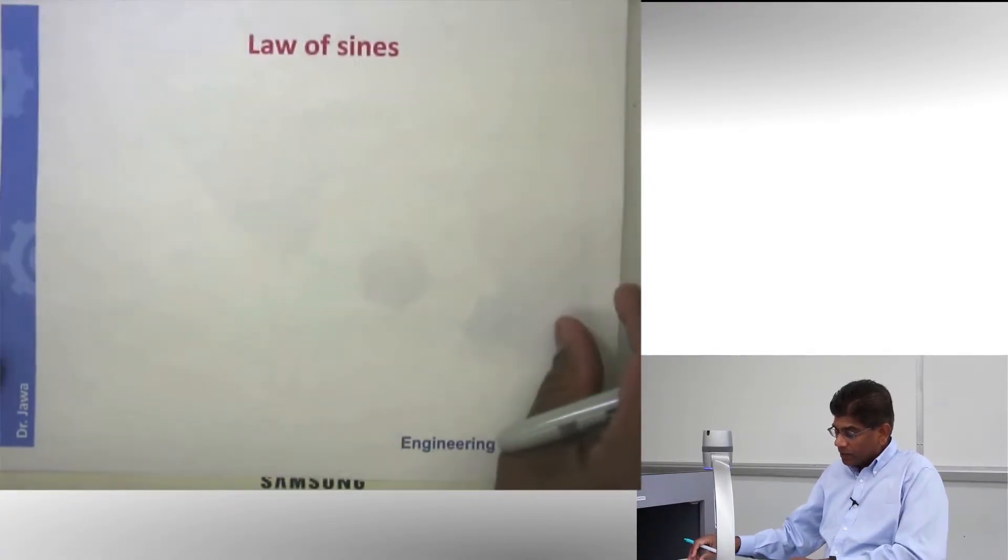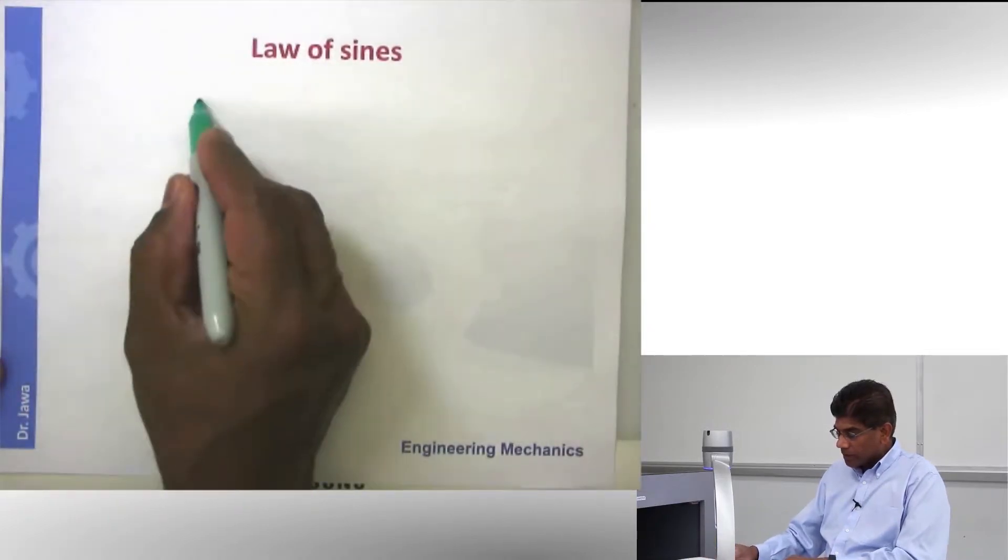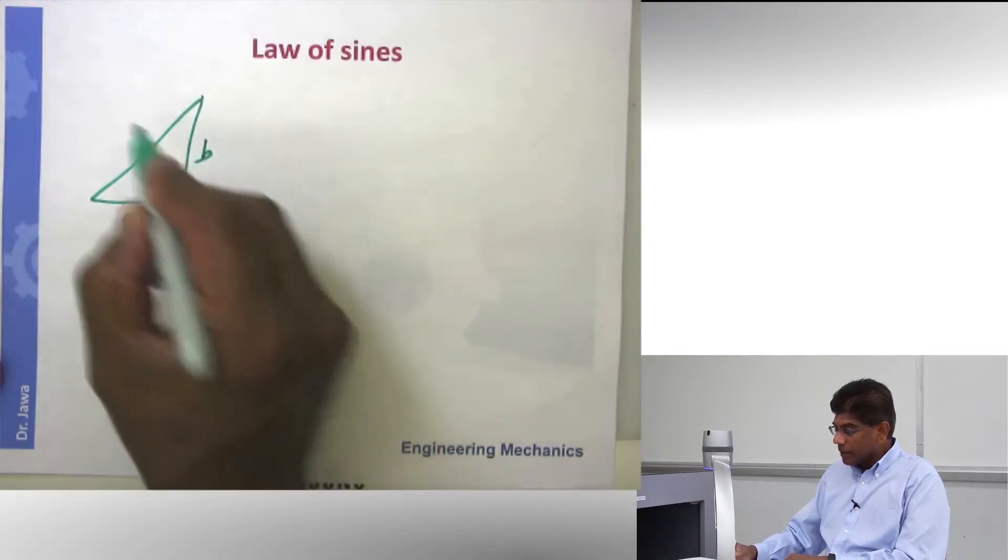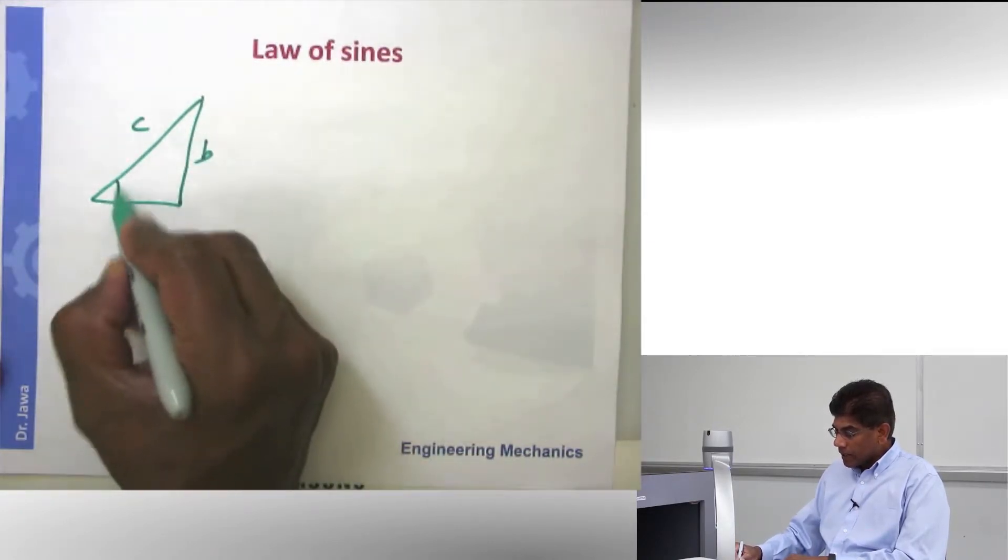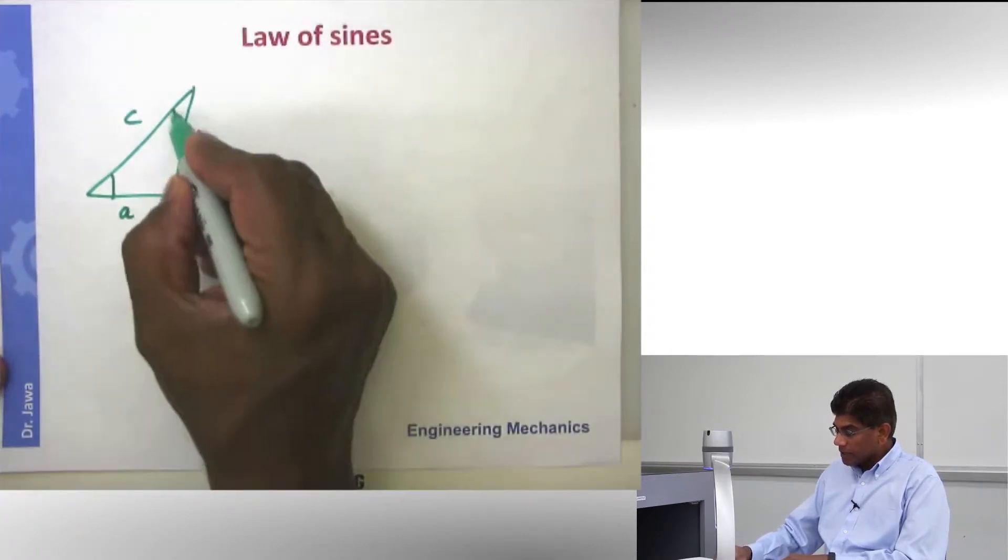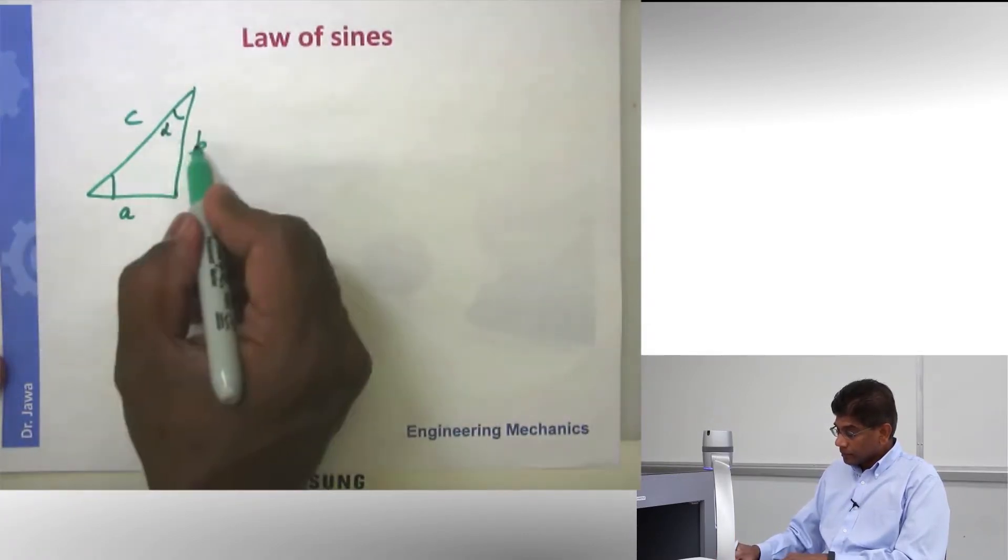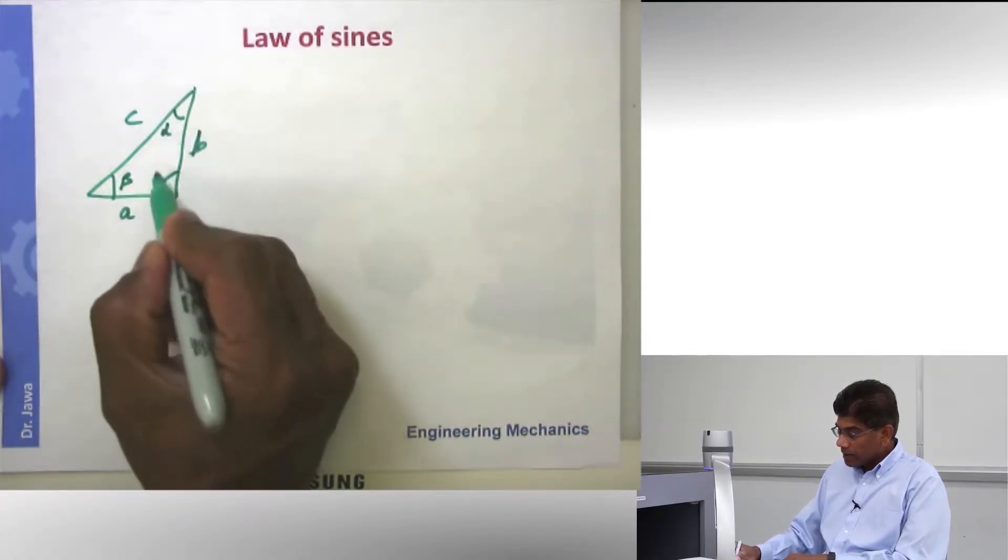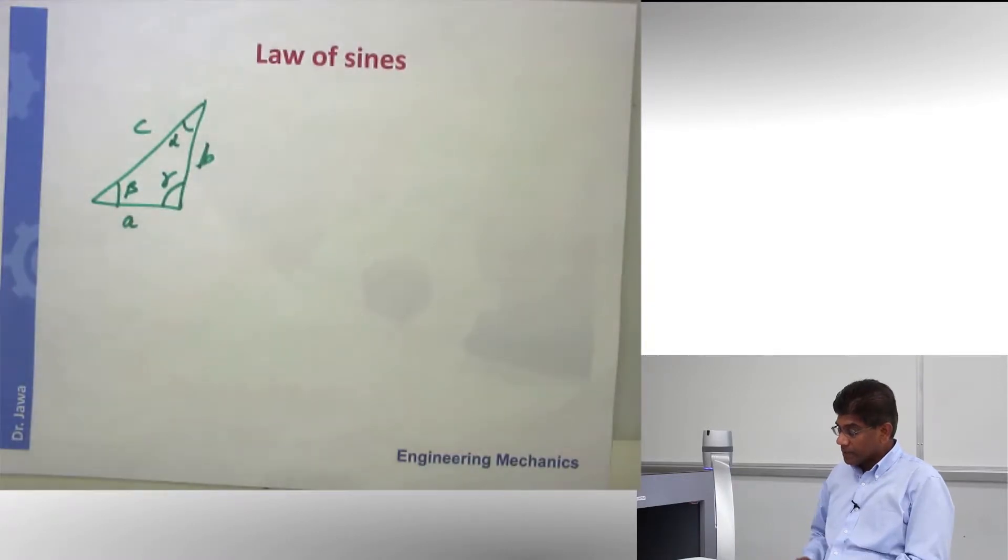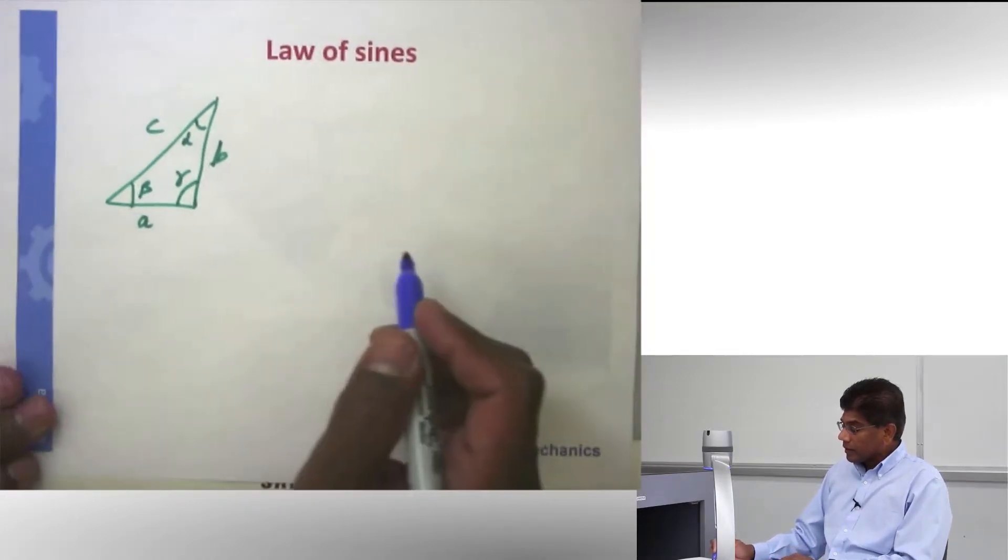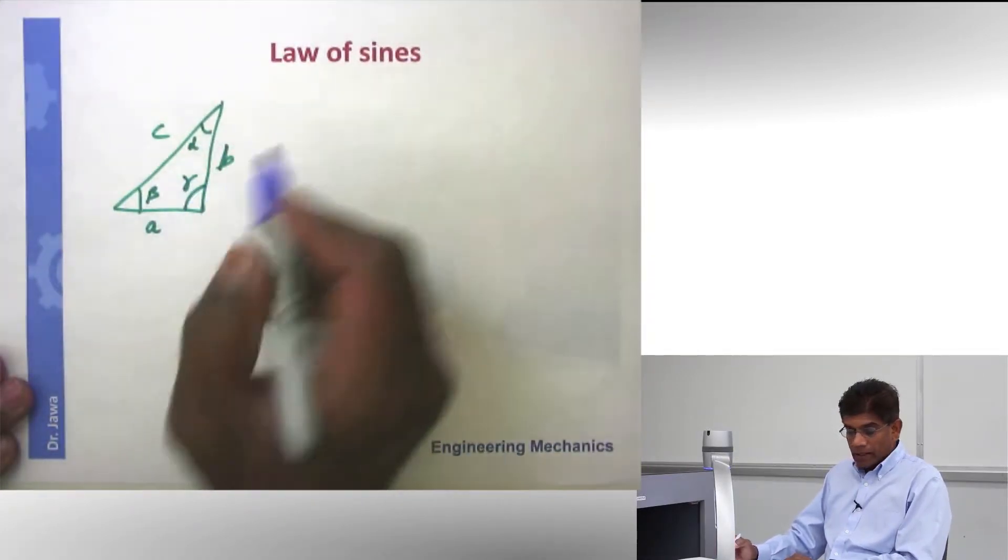So if I have a triangle, for example in this case, here I have a triangle. Let's say this is side A, side B, side C. And let's say this angle in front of this side is alpha. In front of side B is beta. And let's say this angle is gamma. I have three sides and three angles. And if I have all that, then I can write the relationship involving the sides and the angles.